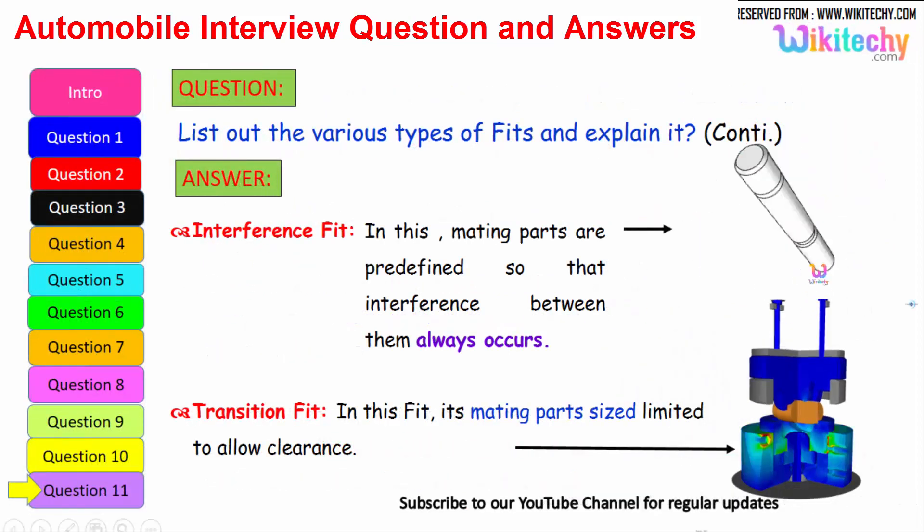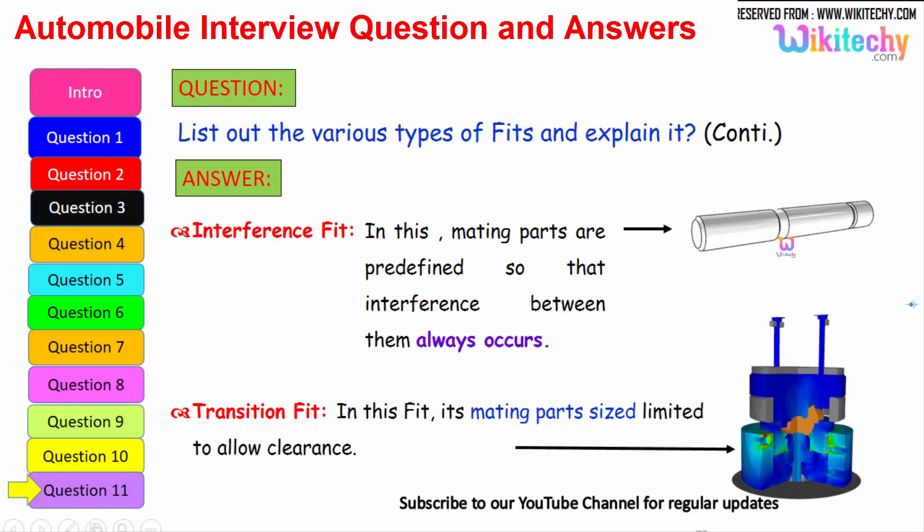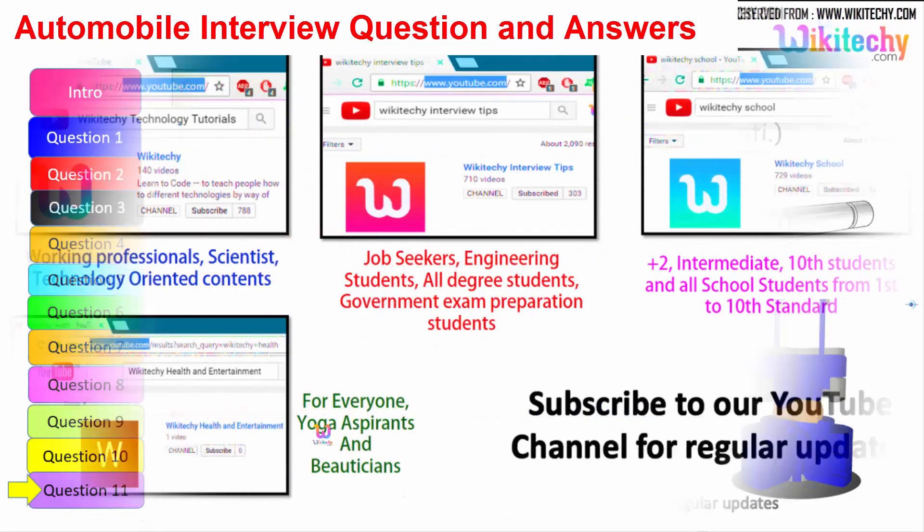If you talk about the interference fit, here is the one which is connected to the other one. In this the mating parts are predefined so that interference between them always occurs. The final one is transition fit. In this fit, the mating parts size is limited to allow clearance. You should not have exact fitting, it may break. You can see the greenish one, that is your transition fit. That is it.